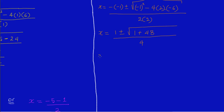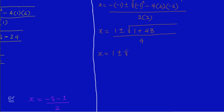So we're going to say x is equal to 1 plus or minus — I'm taking the square root of 1 plus 48, which gives us 49 — and that is all over 4. So x is equal to 1 plus or minus, and we know that the square root of 49 is 7, because 7 times 7 is 49. So I have a 7 here, and that is all over 4.